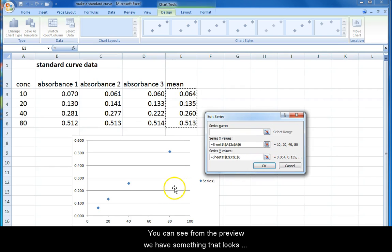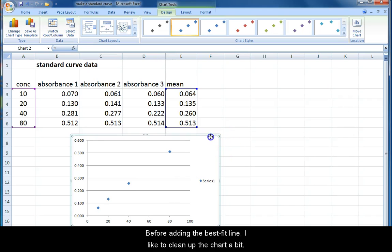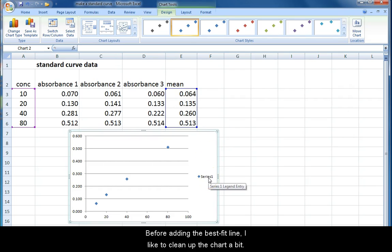You can see from the preview we have something that looks like a straight line. Click OK to finish selecting data. Before adding the best fit line, I like to clean up the chart a bit. Remove the unnecessary grid lines by clicking on one and hitting delete.